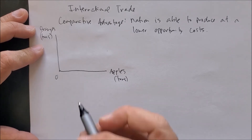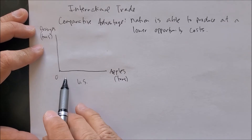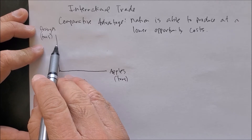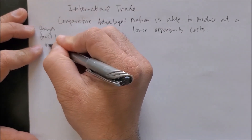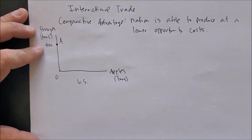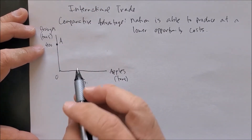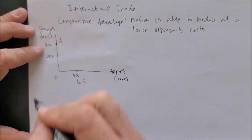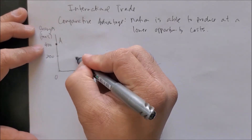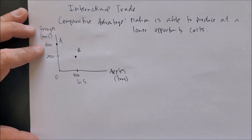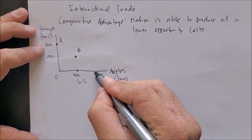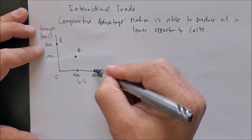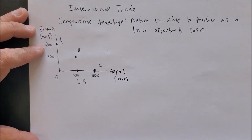Let's look at one example — the United States. The U.S. could produce zero apples and 400 oranges, which we'll call point A. It could also produce 400 apples and 200 oranges, point B, or 800 apples and zero oranges, point C.